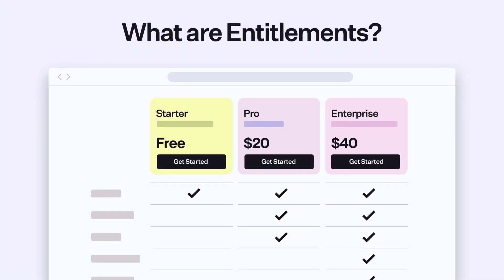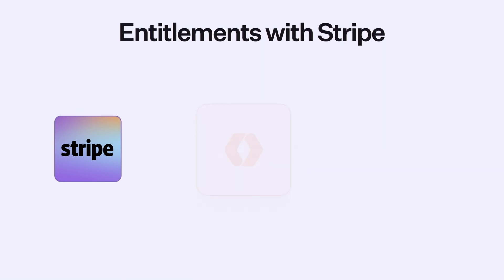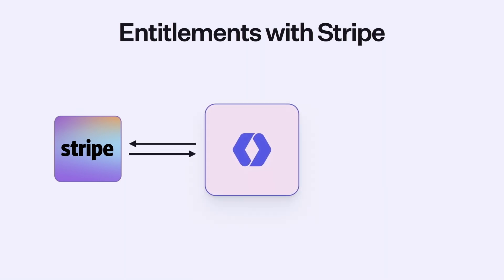Third is entitlements. Entitlements are essentially what features users have access to depending on what plan they're on. If you're on the free or starter plan, you might get the base entitlements. If you upgrade to the pro plan, maybe you get some more storage and capabilities. And if you're on the enterprise plan, you'll get all the enterprise entitlements. The first way we're solving entitlements is integrating them with Stripe. You connect your Stripe account to WorkOS, and WorkOS pushes data into Stripe and registers webhook handlers to get data out. WorkOS handles pulling all of the entitlement information out of Stripe and pushing it directly into the front-end session context, so you can dynamically update capabilities based on what plan somebody has subscribed to.